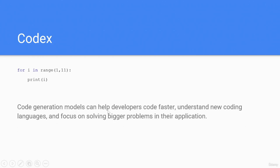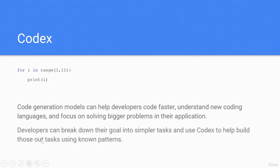Code generation models can help developers code faster, understand new coding languages, and focus on solving bigger problems in their application. Developers can break down their goal into simpler tasks and use Codex to help build those tasks using known patterns.